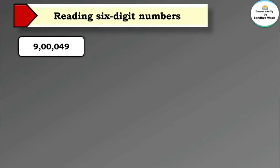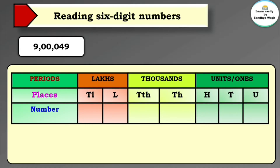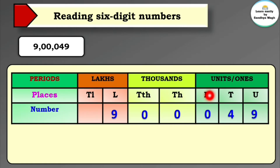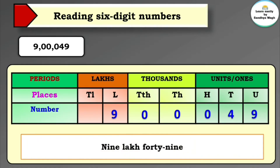Next number is 9,00,049. Let's write this number in their places: nine is in the lakhs place, zero is in the ten thousands place, zero is in the thousands place, zero is in the hundreds place, four is in the tens place, and nine is in the units place. Since ten thousands, thousands, and hundreds places all have zero, we read this number as: nine lakh and forty-nine.